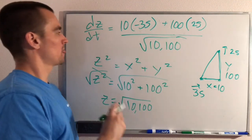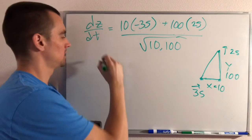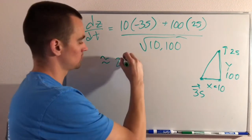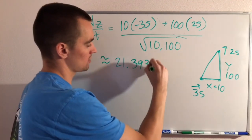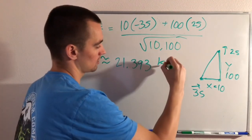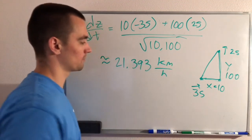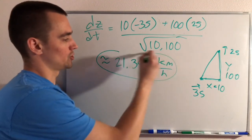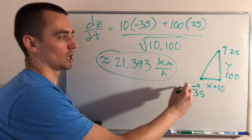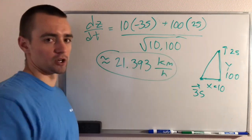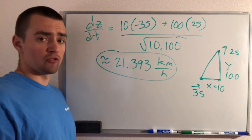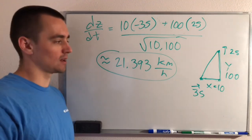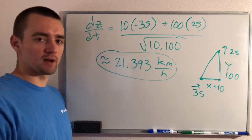Plugging everything into a calculator and simplifying gives us dZ/dt ≈ 21.393 kilometers per hour. That's exactly the rate at which the two ships are moving away from each other at four o'clock PM. If that all made sense, drop a comment below saying you got it, and hope to see you back next time.